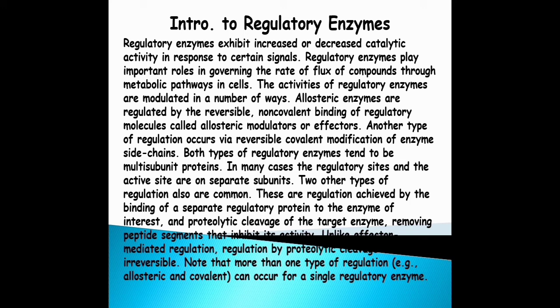Allosteric enzymes are regulated by the reversible non-covalent binding of regulatory molecules called allosteric modulators or effectors. Another type of regulation occurs via reversible covalent modification of enzyme side chains. Both types of regulatory enzymes tend to be multi-subunit proteins.